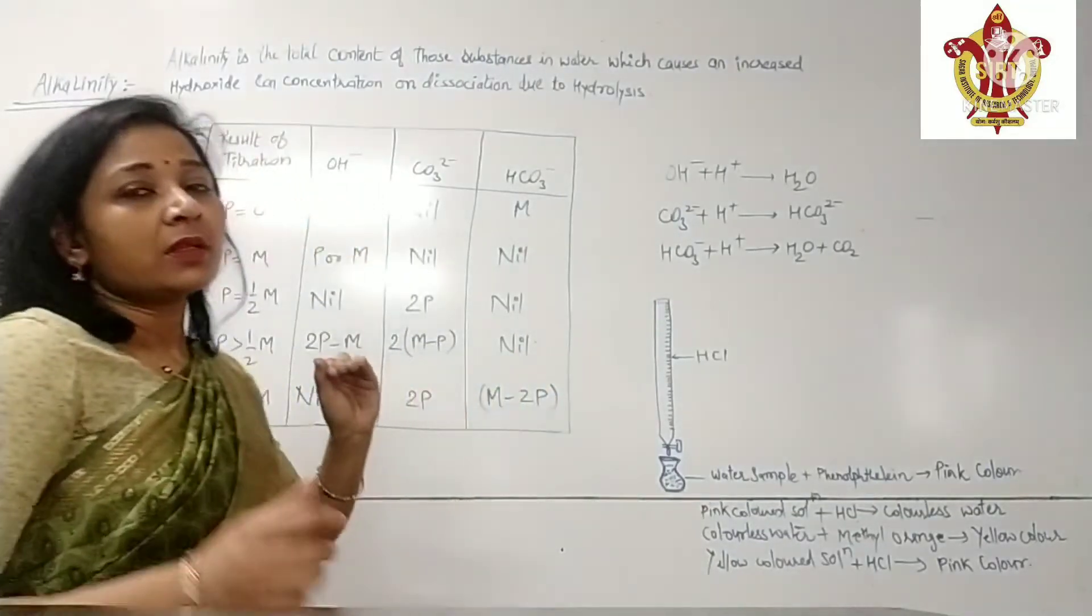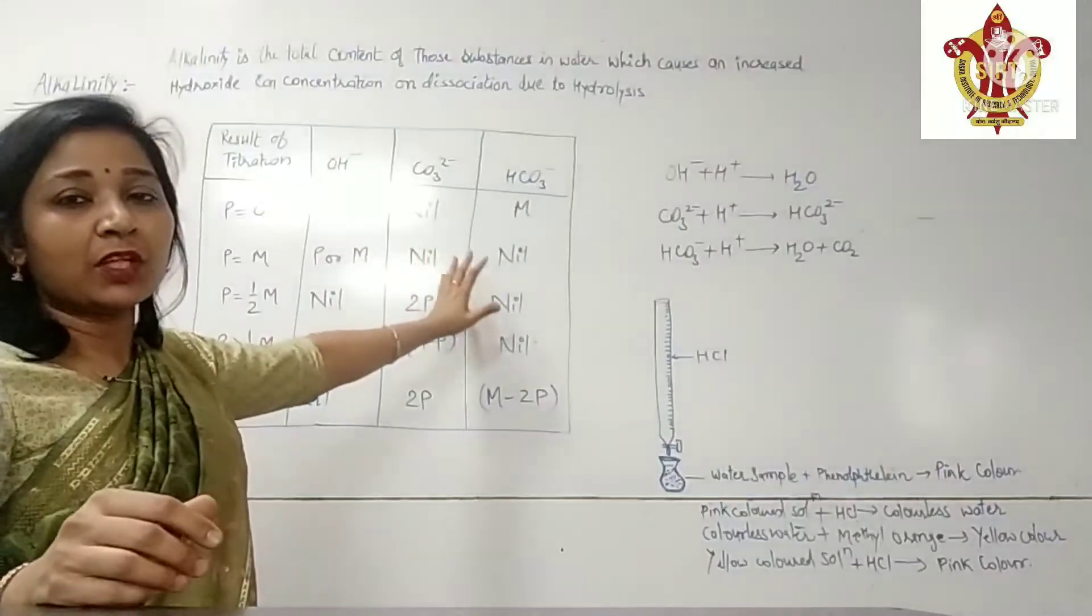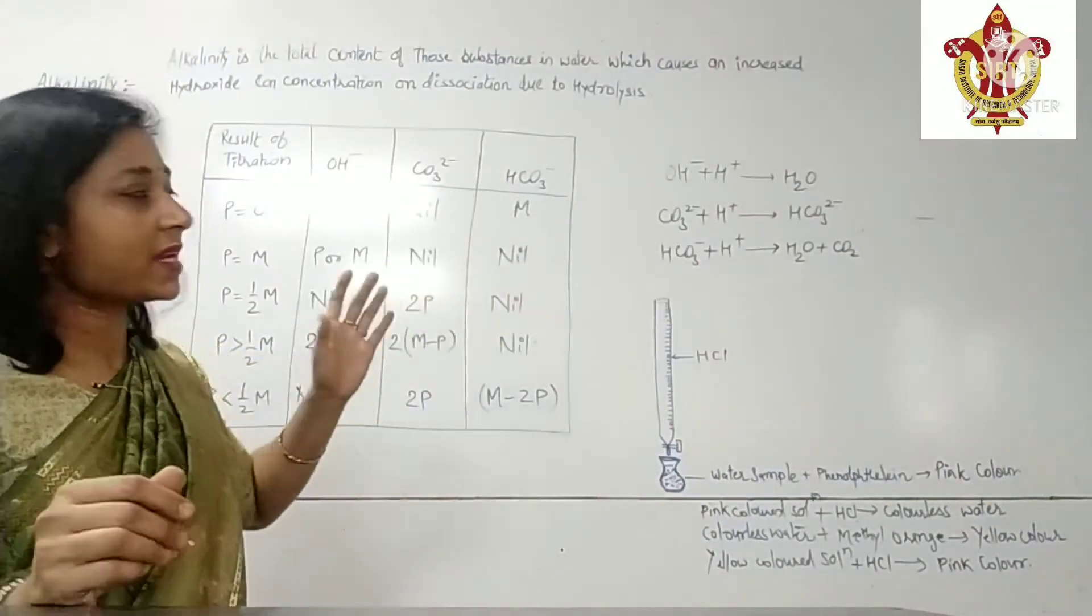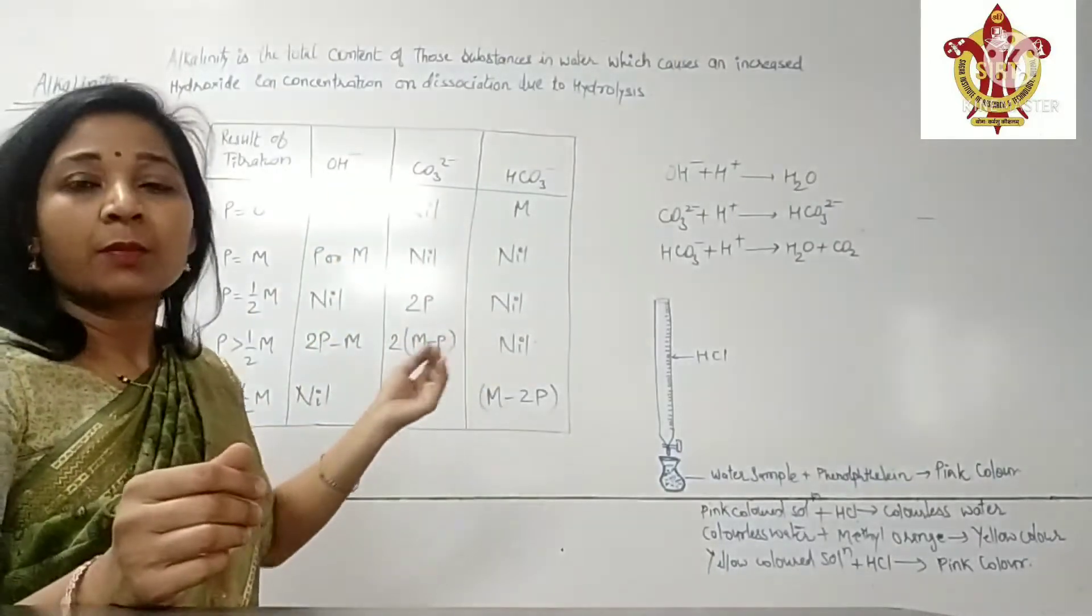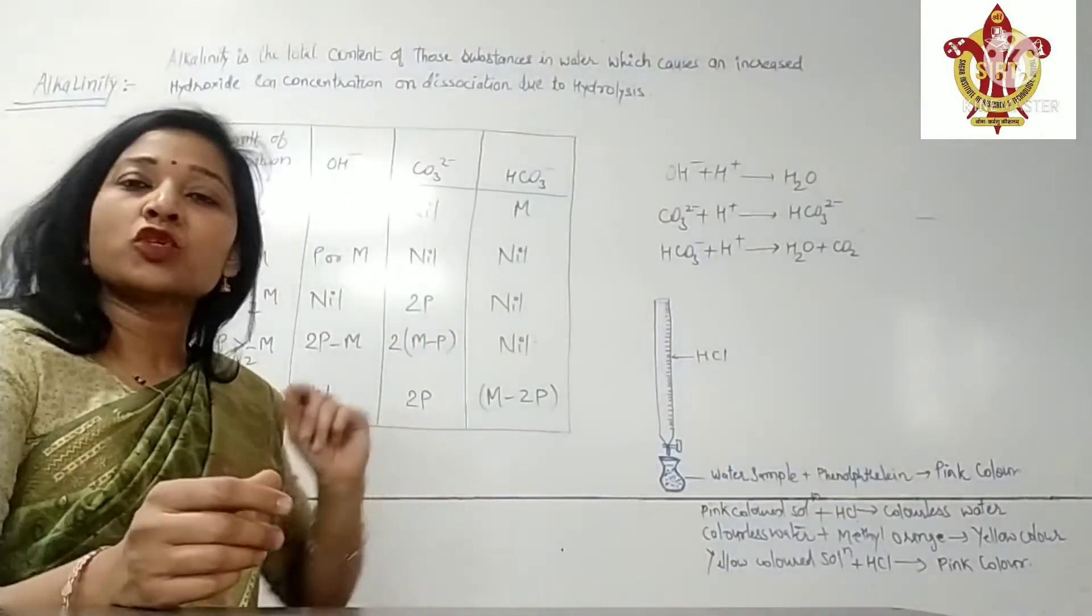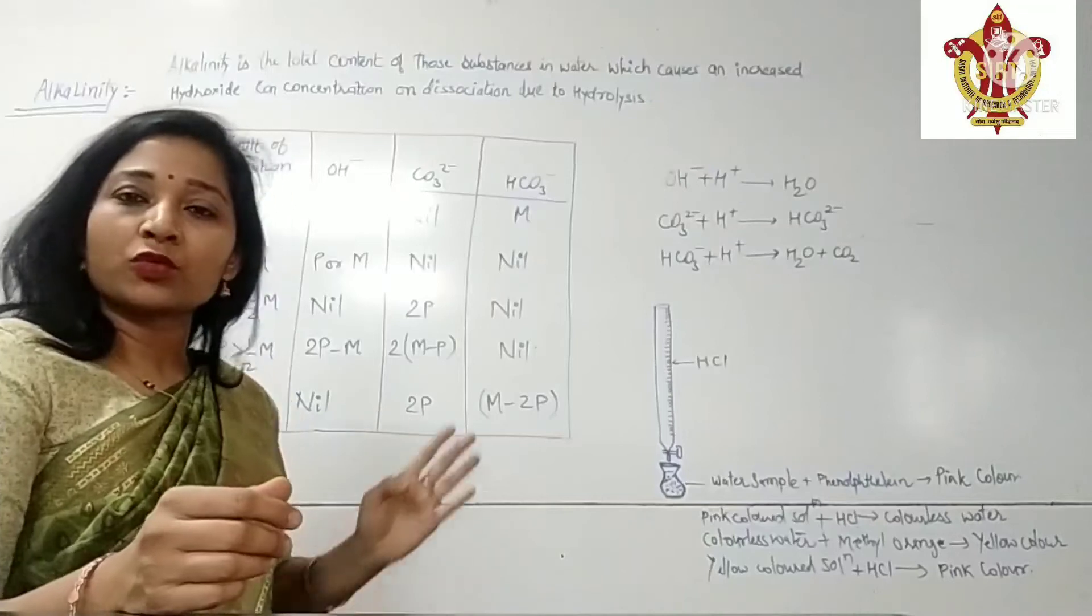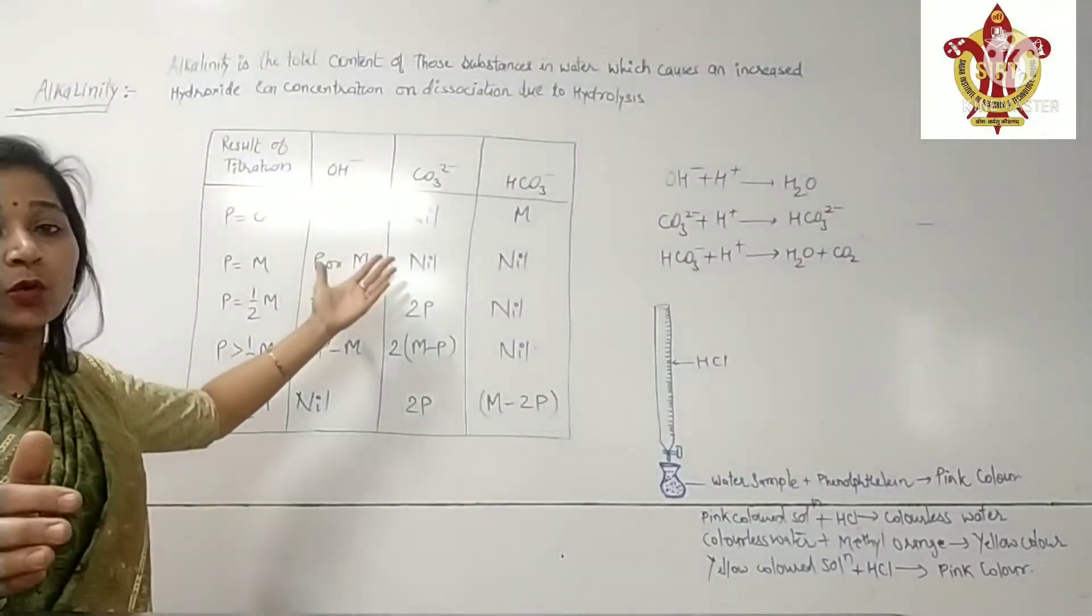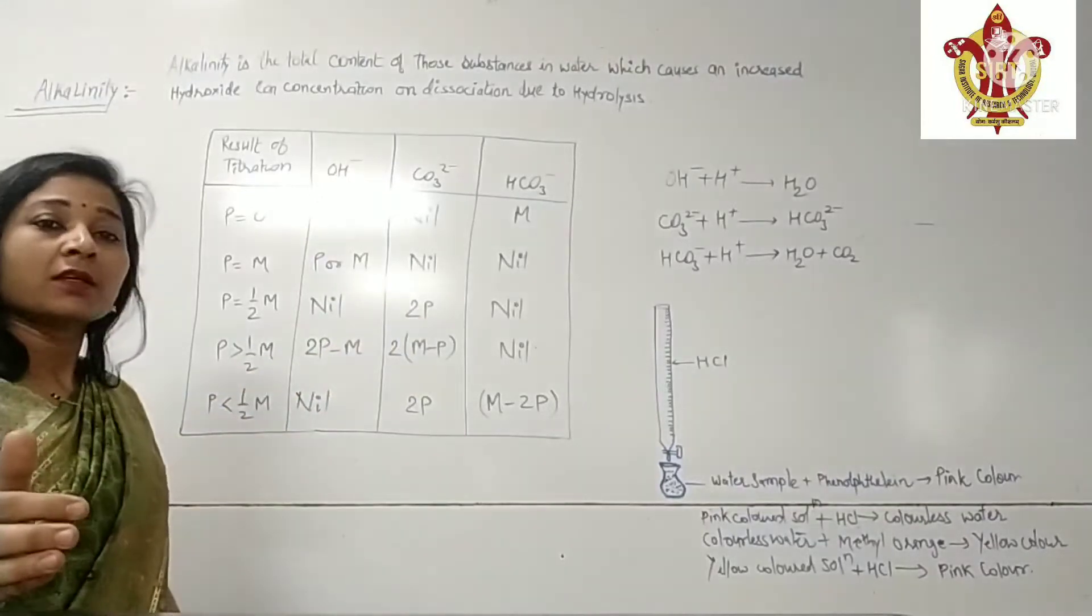Now, there is a table which shows the values of P and M and their comparison and the presence of ions because of them. So we have to note P and M values and according to which ions are present.